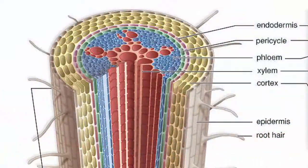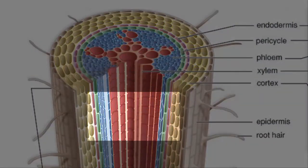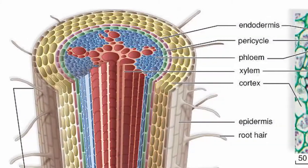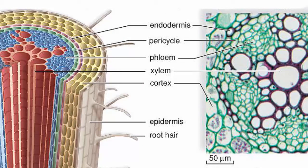After the endodermis, we now have the vascular cylinder which is mostly filled with vascular tissues, the xylem and the phloem. There is however a layer of parenchyma cells immediately after the endodermis which can be one to several cell layers thick.